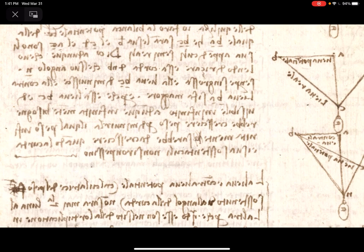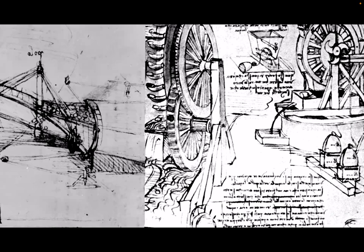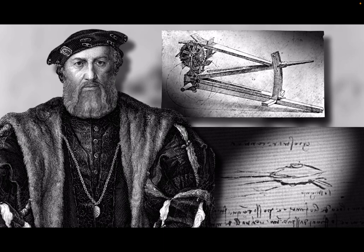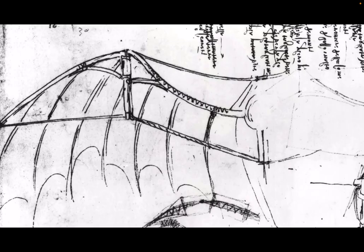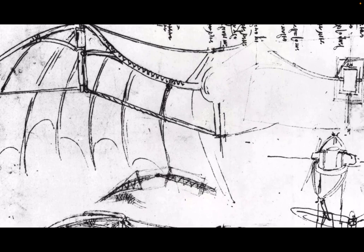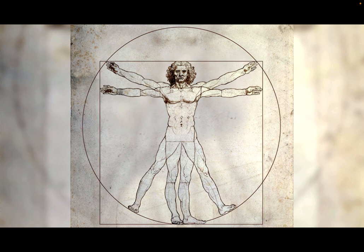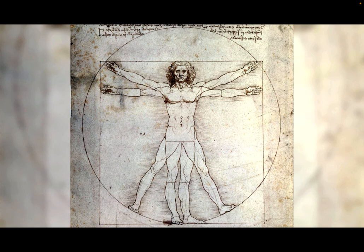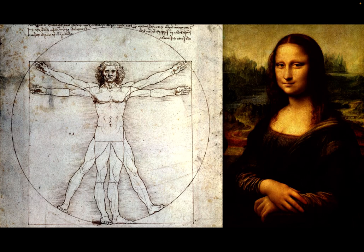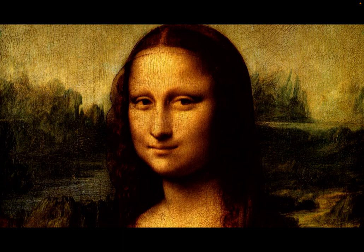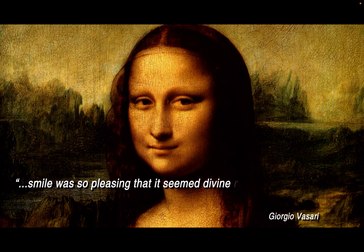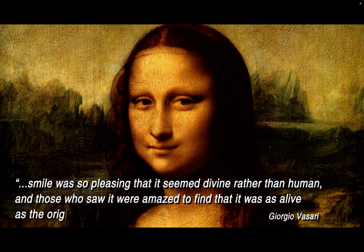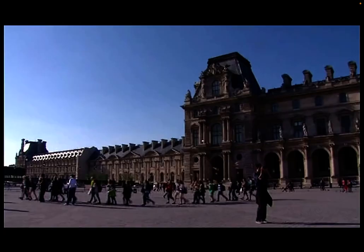These notebooks reveal da Vinci's true genius. He drew plans for everything from churches and fortresses to water systems and bridges. For the Duke of Milan, he designed advanced weapons including a tank and machine gun. Da Vinci's fascination with flight produced sketches for flying machines centuries before the first airplane was built. His interest in human anatomy was expressed in the Vitruvian Man, explaining the proportions of the human body. His anatomy study brought gripping realism to his paintings, especially the Mona Lisa, or La Gioconda, the laughing one, which he finished around 1507.